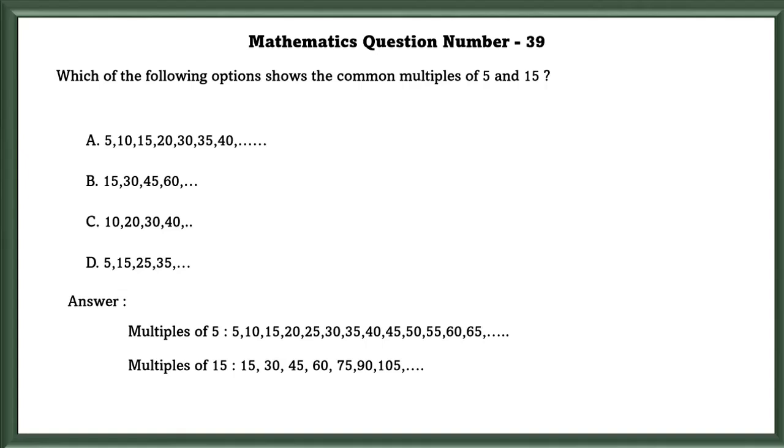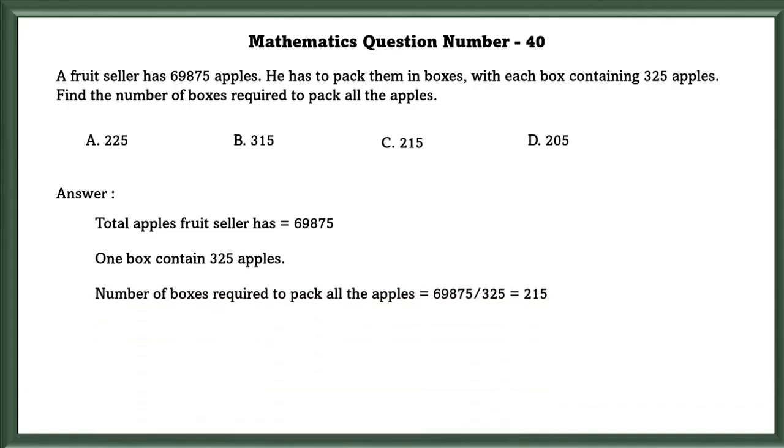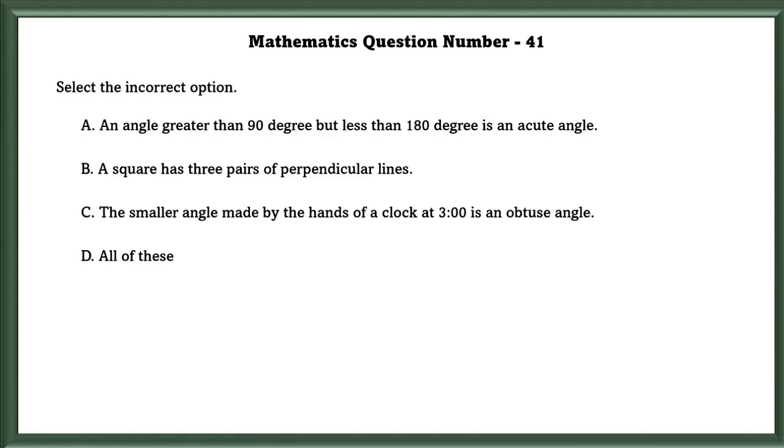Mathematics question number 39. Which of the following options shows the common multiples of 5 and 15? The common multiples of 5 and 15 are 15, 30, 45 and 60. That shows B. Mathematics question number 40. A fruit seller has 69,875 apples. He has to pack them in a box with each box containing 325 apples. Find the number of boxes required to pack all the apples. So the total number of apples the fruit seller has is equal to 69,875. One box contains 325 apples. So the number of boxes required to pack the apples is equal to total divided by number of apples in one box, which is equal to 215.